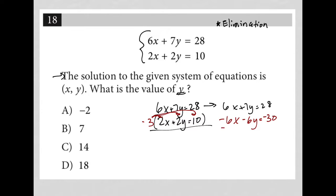When I combine the two equations together now, my 6x's are gone. 7y minus 6y is just y, which is exactly what I wanted to find. So that's already isolated. And y equals 28 minus 30, which equals negative 2. So because I found that y equals negative 2, that means our answer is choice A.